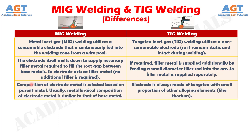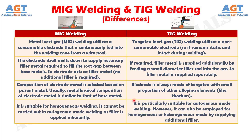Number 3: In MIG welding, composition of electrode metal is selected based on parent metal. Usually, the metallurgical composition of electrode metal is similar to that of base metal, whereas in TIG welding, the electrode is always made of tungsten with a small proportion of other alloying elements like thorium.